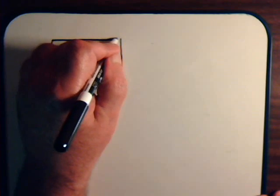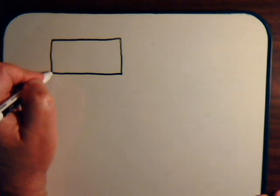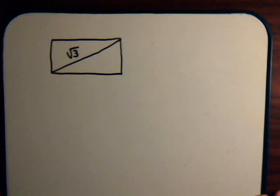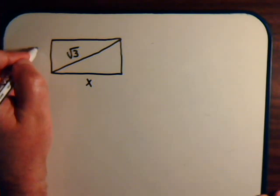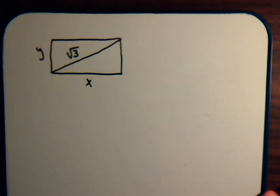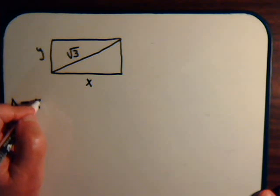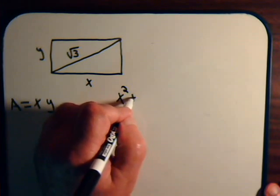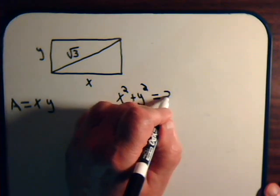In this video we're going to consider an optimization problem — a maximum/minimum type situation subject to a constraint. Suppose we have a rectangle with sides x and y, and we want the diagonal to equal the square root of 3. We want to find what values of x and y maximize the enclosed area. The area is x times y, and our constraint is x squared plus y squared equals 3.